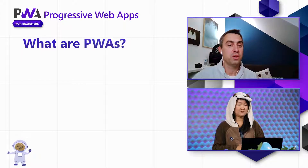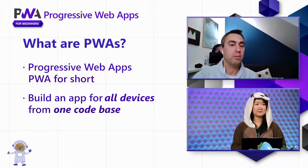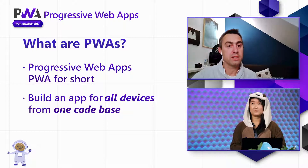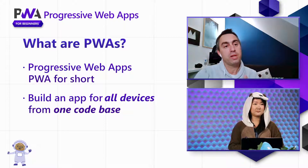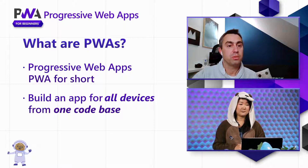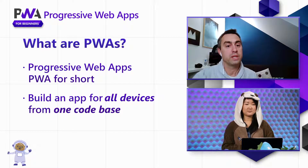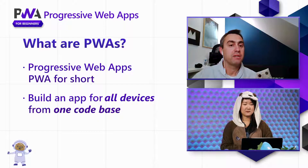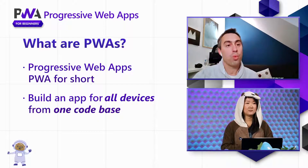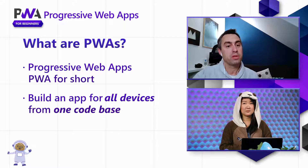Without any delay, let's get into it. So Patrick, tell me a little bit more about what progressive web apps are. Progressive web apps are also known as PWA for short, and they're really a way to build applications for all devices. So if you want to build an application that works on a laptop, desktop computer, with Windows or Mac or Linux OS, or on a tablet or mobile device, and you want to do this from one code base only, then PWA is a great option.